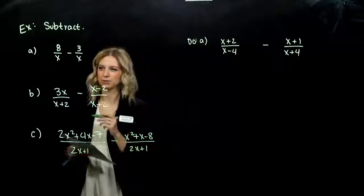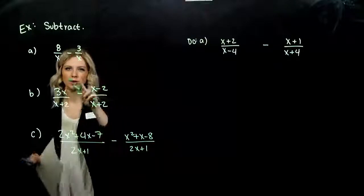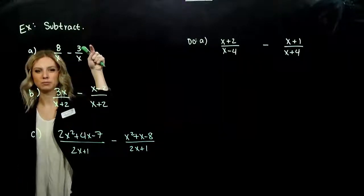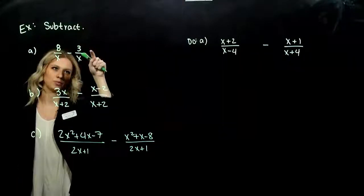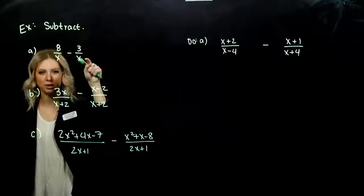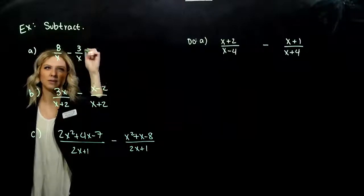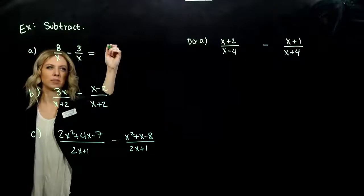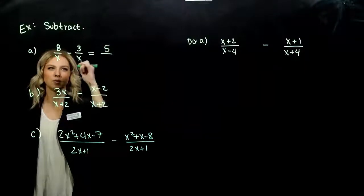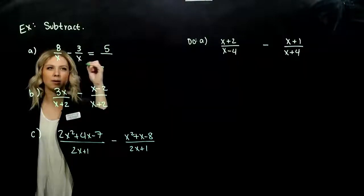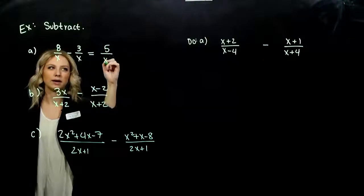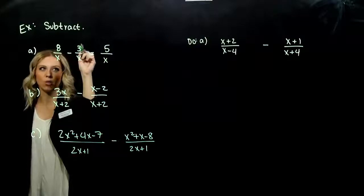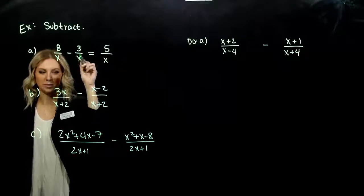Simplify if we need to. When we have monomial over monomial minus monomial over monomial, it's a pretty simple case. 8 minus 3 — what are we left with up there? 5, and we keep the same denominator, x. Very straightforward when we only have one term up in the top.